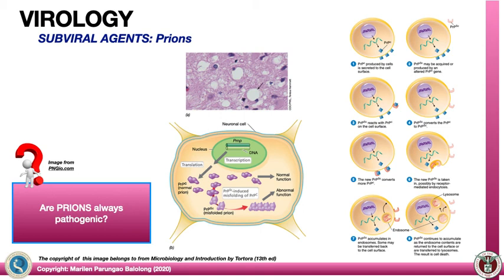For another sub-viral agent: prions. Examples include scrapie and mad cow disease in cattle. Instead of RNA, prions are said to be proteins — they are proteins produced by cells and secreted to the surface. Normal prions and pathogenic prions differ in protein configuration, but what triggers the misfolding or change in configuration is not yet known. So it is not understood how a harmless protein suddenly becomes pathogenic.